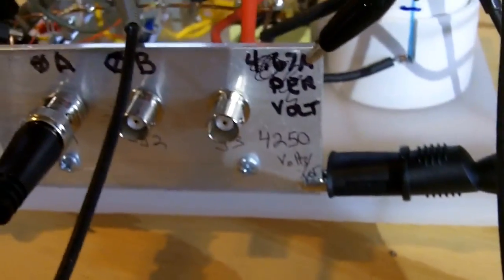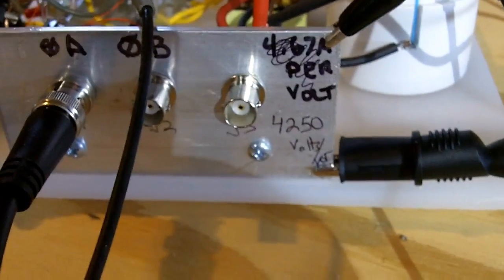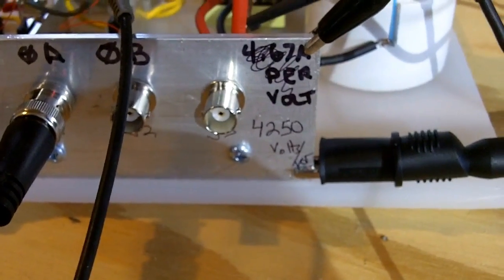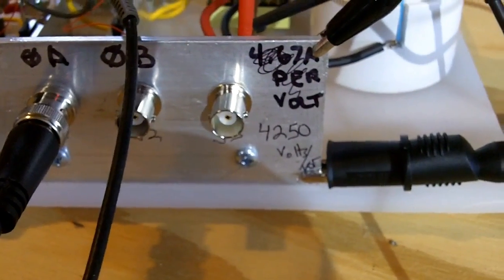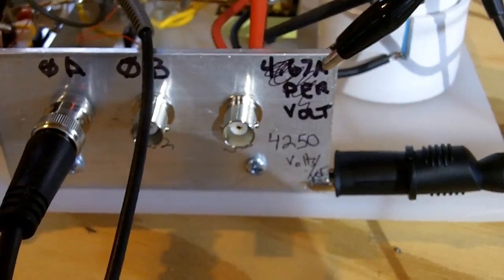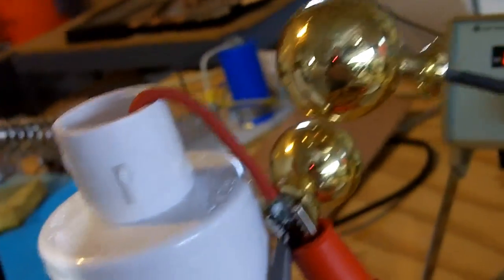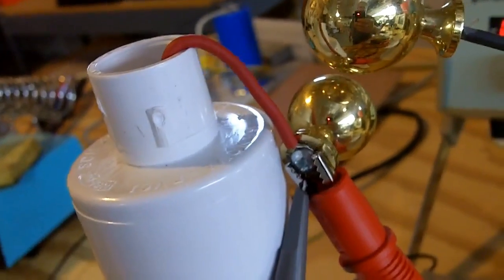This other output here, the third output on the right, that's what the Arduino reads the output voltage. For every one volt appearing at that point, at that port, there's 4250 volts at the output. Which is a little brass ball that isn't normally at the top. I got it open so I can put a lead on it.